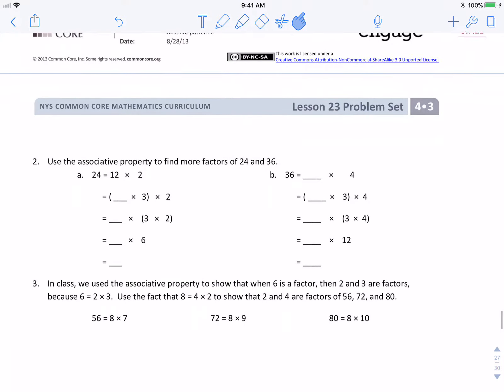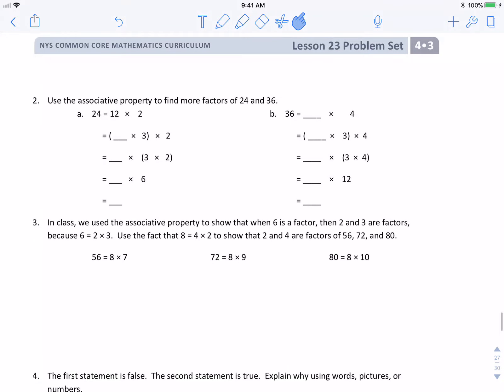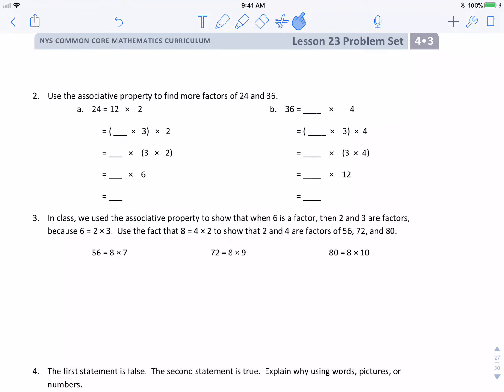2 goes into 84. 3 goes into 84. So, does 6 go into 84? Remember, if both 2 and 3 go into a number, then 6 goes into that number as well.